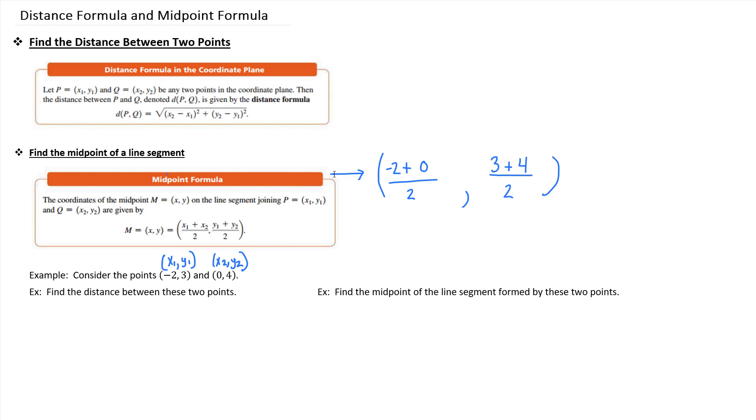So then you just have to simplify each of those expressions. And we have (-2 + 0) is -2 divided by 2, and then we have (3 + 4) which is 7 divided by 2.